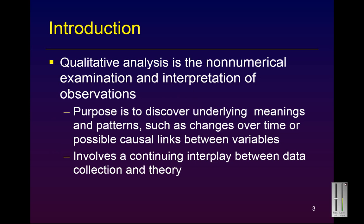Unlike its quantitative partner, qualitative analysis relies on rules and practices that are not so hard and fast. While qualitative analysis is the non-numerical analysis of observations, there are times when we do put numbers to our qualitative analysis. But its primary purpose is to discover meanings and patterns that underlie the observations we make during our research. While much of qualitative data analysis is the analysis of textual data, we can analyze anything that we observe. And while we cannot necessarily make causal assertions as we might in some quantitative research methods, we can articulate possible links by examining either changes over time or the co-occurrence of certain variables with one another.